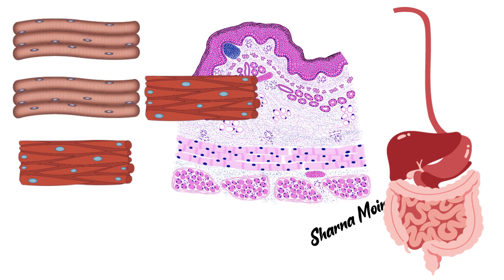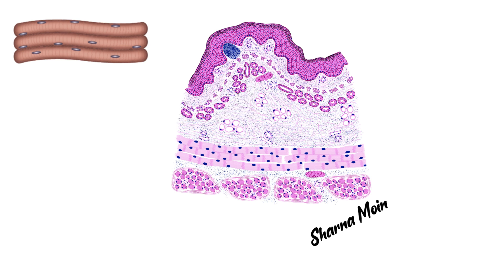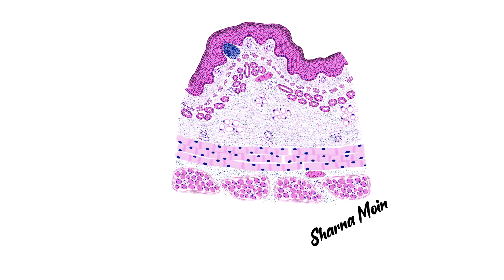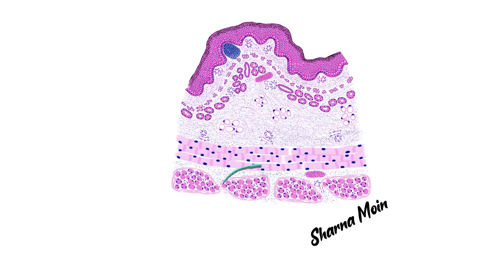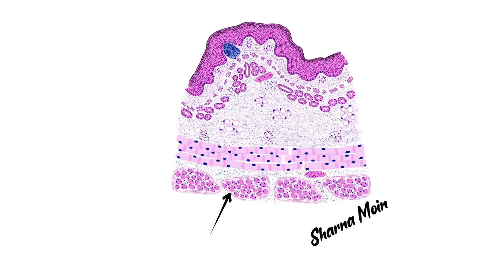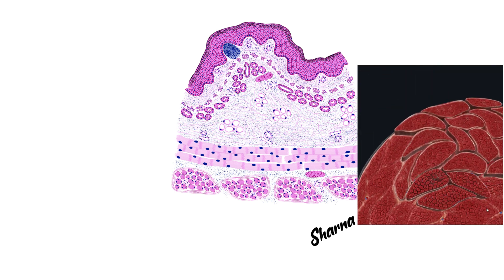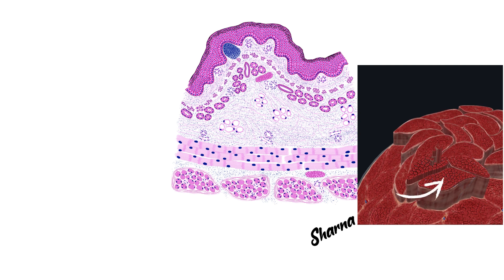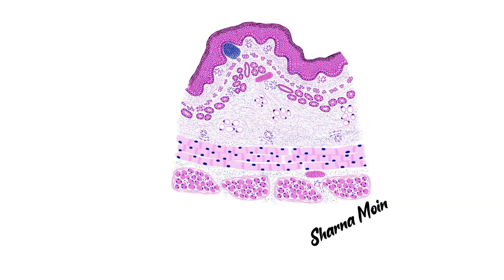Now I'll show you how to identify skeletal versus smooth muscle. Skeletal muscle fibers are long, cylindrical, and have peripheral nuclei. In the inner circular layer you can see the long fibers with peripherally placed nuclei, and if you observe more closely you will find cross striations — so this is skeletal muscle without any doubt. In the outer longitudinal layer, the fibers are placed in bundles called muscle fascicles, which are covered by perimysium. The nuclei are situated peripherally, so this slide shows only skeletal muscle — this section is from the upper one-third of the esophagus.